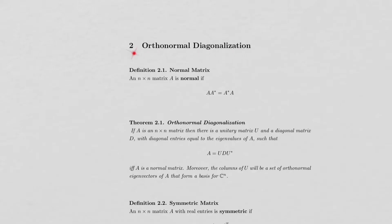This video starts in section 2 of the notes on diagonalization; section 1 was covered in a previous video. We start by defining a normal matrix to be an n-by-n matrix satisfying a certain property. Theorem 2.1 is the main theorem in this section about orthonormal diagonalization. The book has several lead-up theorems, but for brevity we skip those and state Theorem 2.1 without proof.